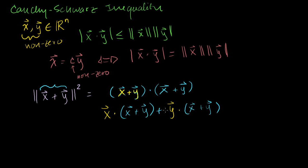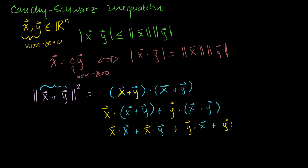Then I can distribute each of those into the sum. So this becomes x·x plus x·y, plus y·x plus y·y. And that's the magnitude or length of our vector x plus y squared rewritten in expanded form.